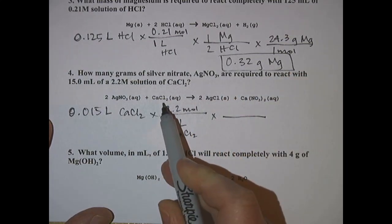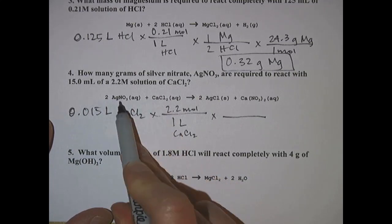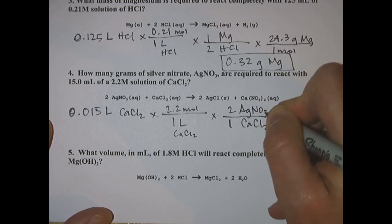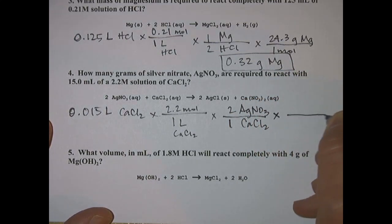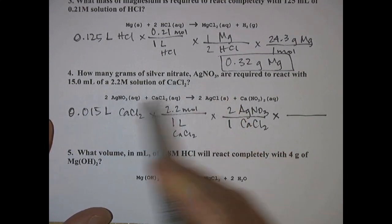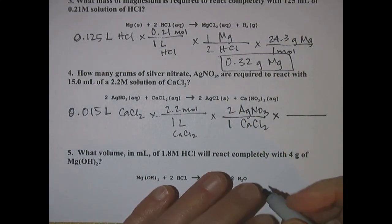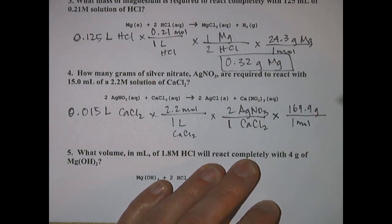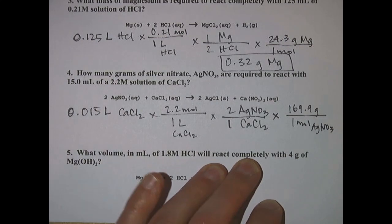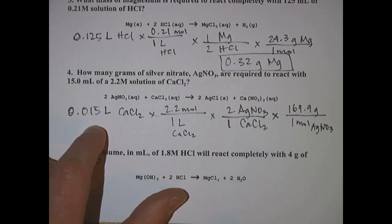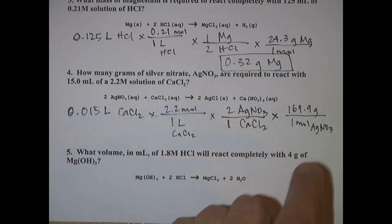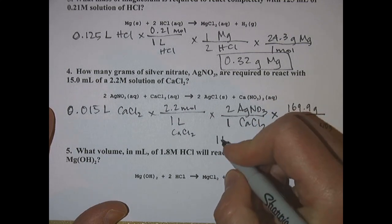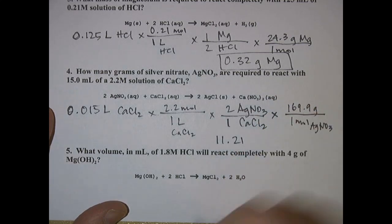You're interested in the silver nitrate, so it's a one to two ratio. One calcium chloride reacts with two silver nitrates. Silver nitrate is a solid though, so we can figure out how many grams by using its molar mass which is about 170. So in this problem you have 0.015 times 2.2 times 2 times 169.9, and I ended up with 11.21 grams of silver nitrate.